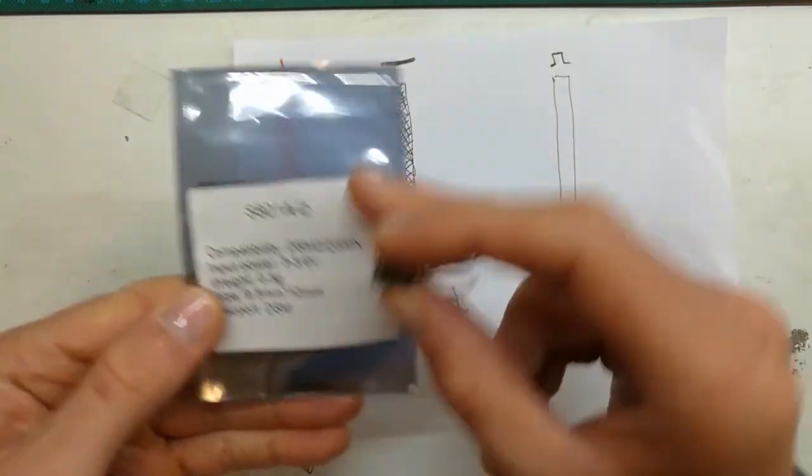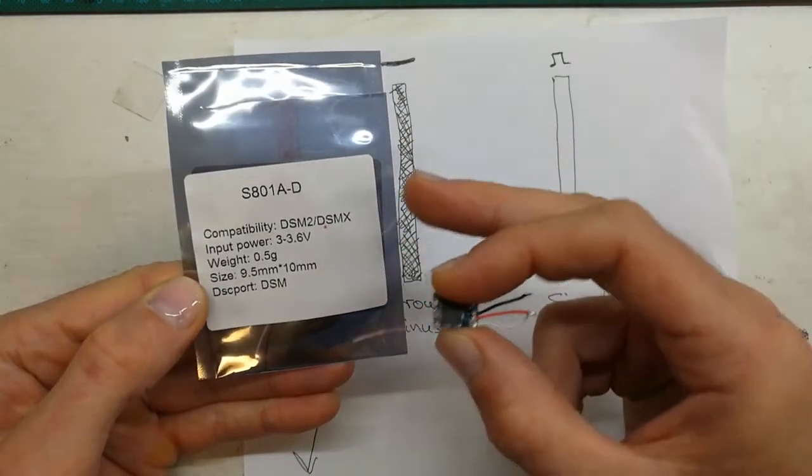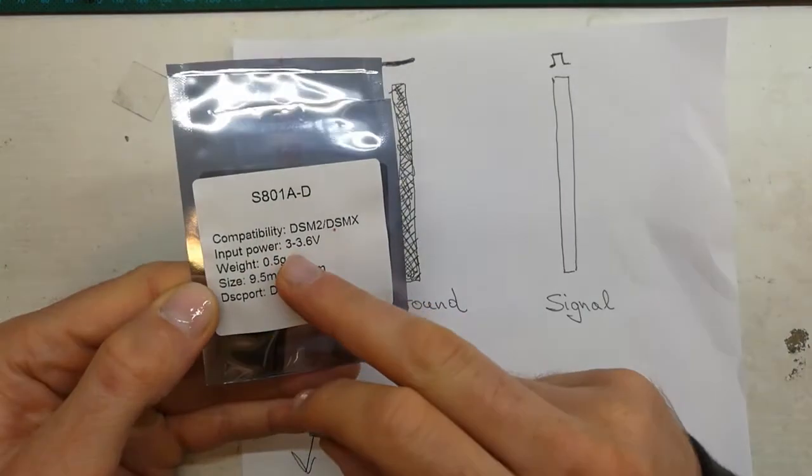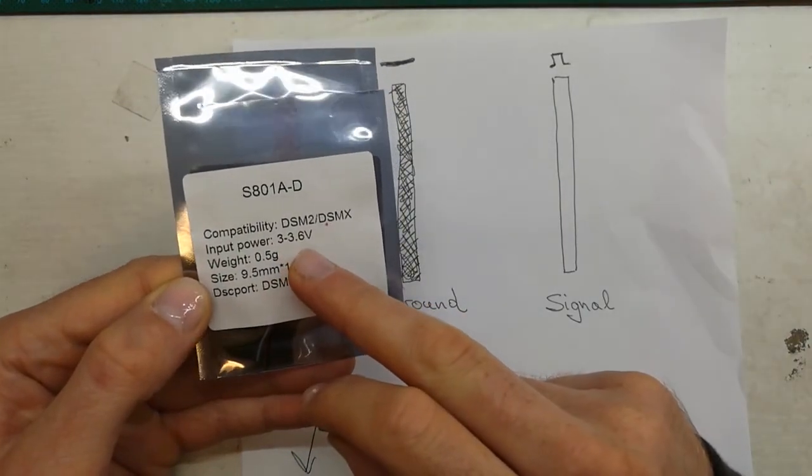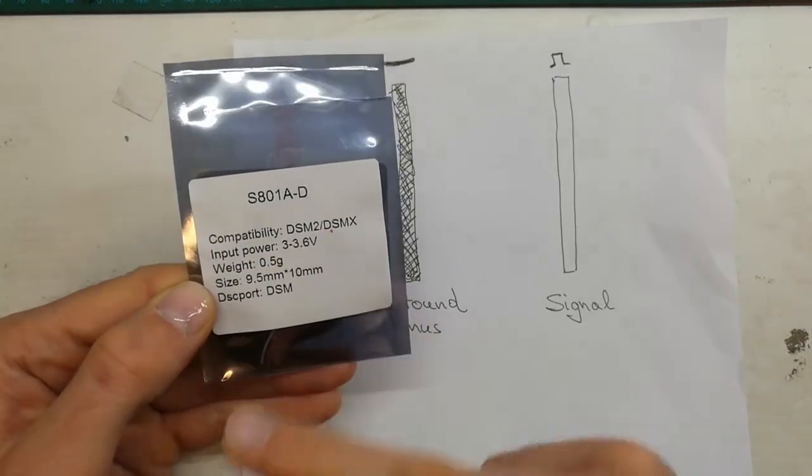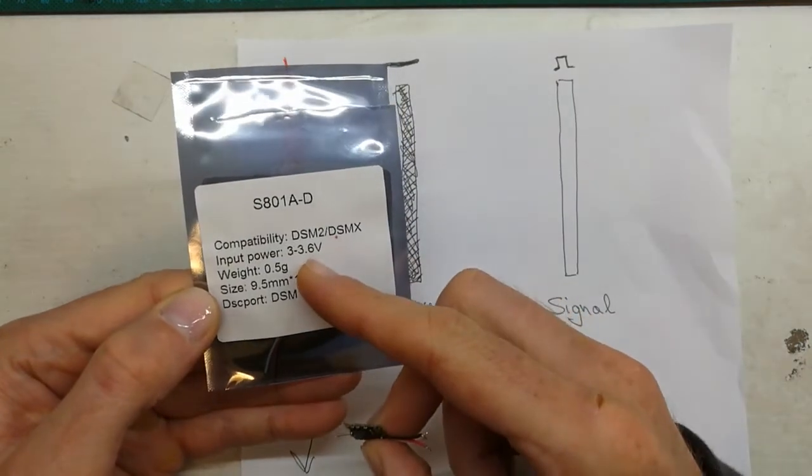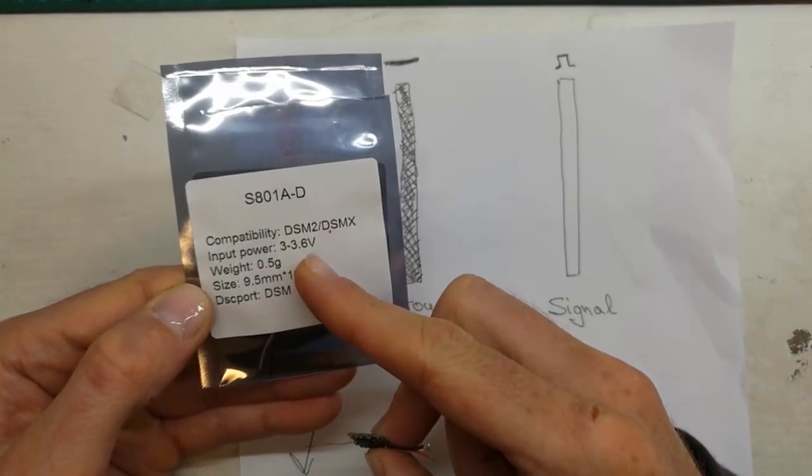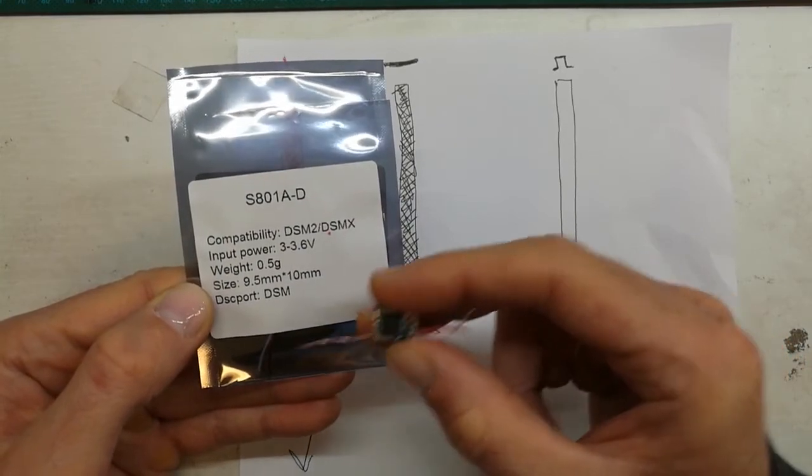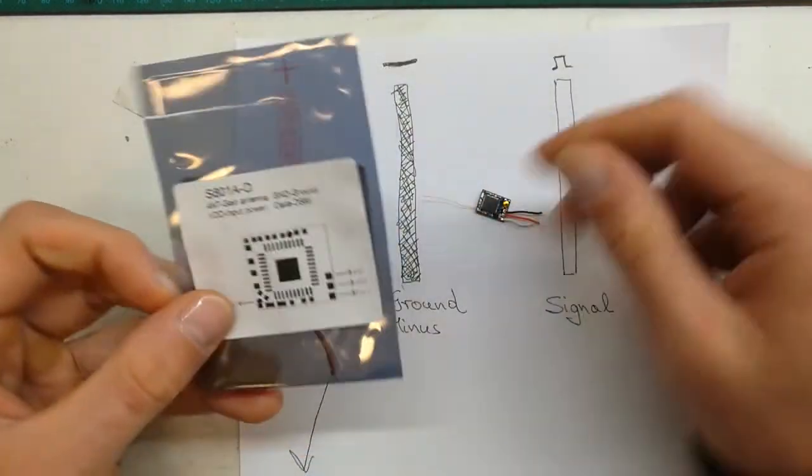This receiver comes in this bag. What can I get from this bag? I can get some useful information. Always check. DSM type receiver, DSM2, input power 3 to 3.6 volts. This means if I power it with less than 3 volts it will not work, that's not enough. If I give more than 3.6 volts it probably will burn.